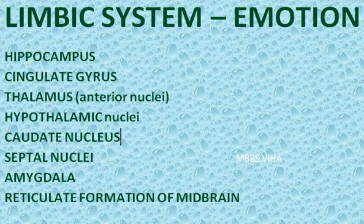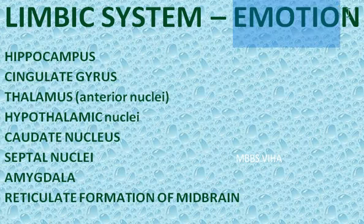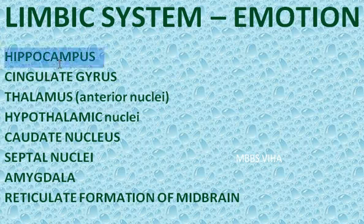If they ask you a question on the limbic system, remember that the limbic system is concerned with emotions. The first thing you need to know are the components, the composition, the parts of the limbic system.